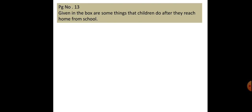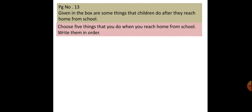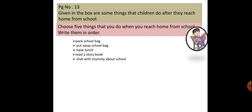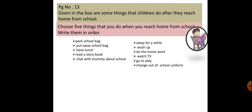On page number 13, given in the box are some things that children do after they reach home from school. Choose five things that you do when you reach home from school and write them in order. The options given are: pack your school bag, put away school bag, have lunch, read a story book, chat with mummy about school, sleep for a while, wash up, do the homework, watch TV, go to play, change out of school uniform. These are the regular things and some of them you might be doing.